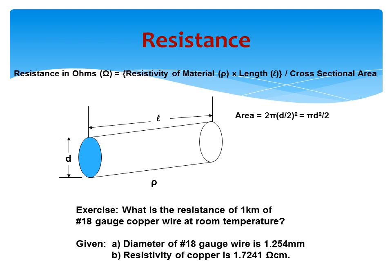Here's a diagram that shows this. Resistance in ohms, symbol omega, is the resistivity of the material, Greek letter rho (lowercase), times the length L, divided by the cross-sectional area. The area of something circular, like a piece of wire with a circular cross-section, is pi times the radius squared. And the radius is half the diameter, so this can be written as pi d squared over 4.